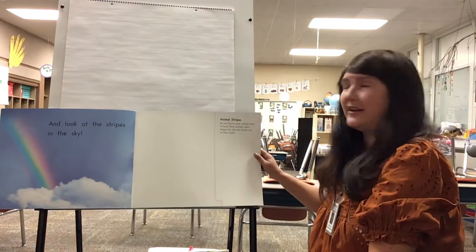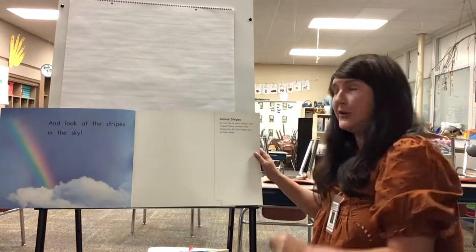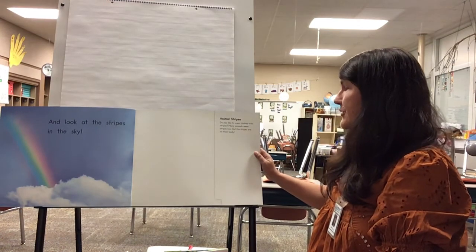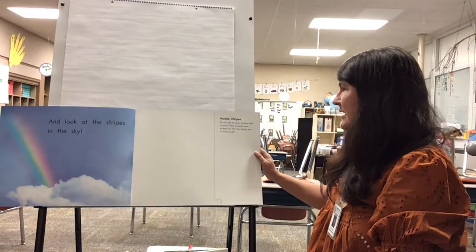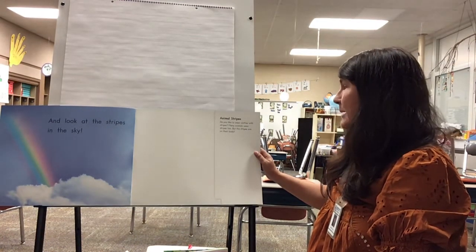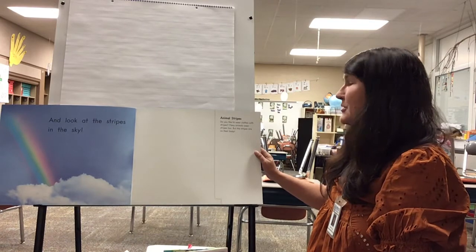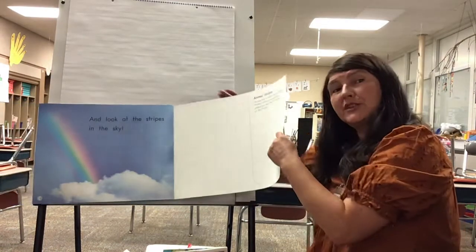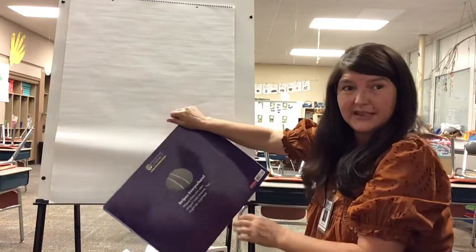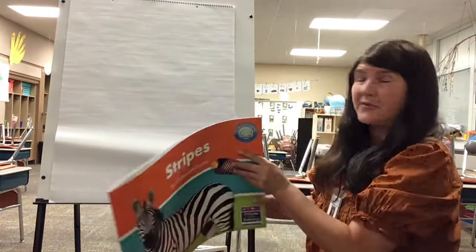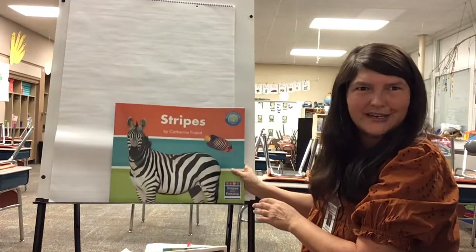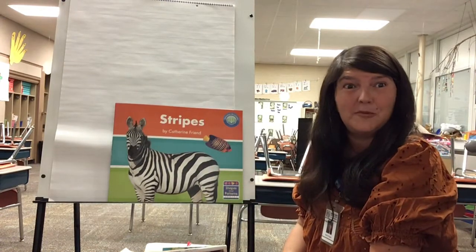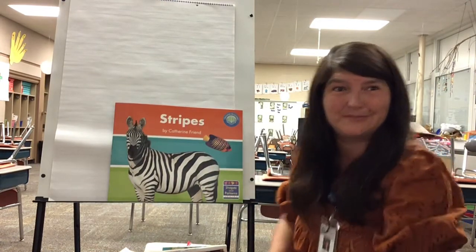Inside the back cover there's a little blurb and I'm going to read it to you. Animal stripes: do you like to wear clothes with stripes? Many animals wear stripes too, but the stripes are on their body. Sometimes those stripes are actually for camouflage — it helps protect the animal to keep them from being eaten by another animal. I hope you have a good day, and we'll be looking at stripes again tomorrow. Bye-bye.